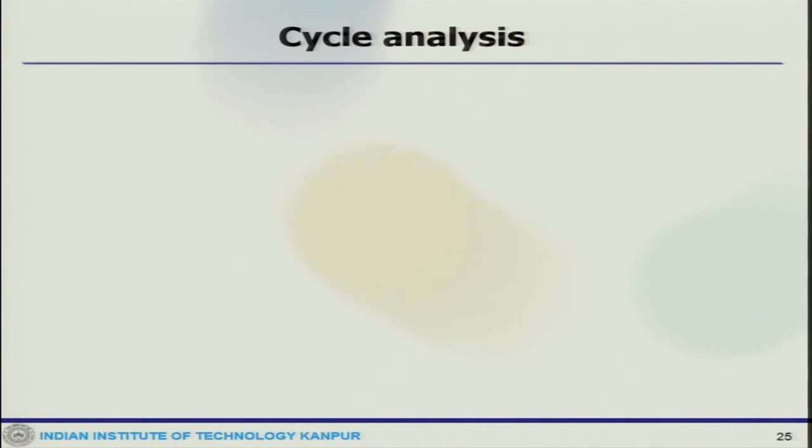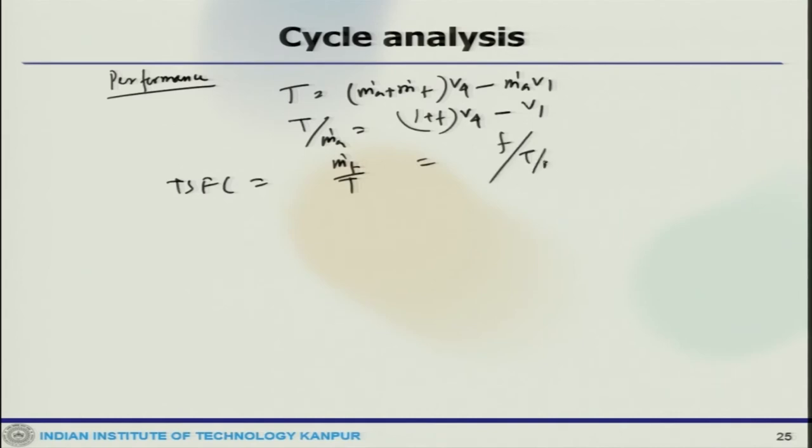Now we just look at the performance analysis. The thrust would be M_dot_A plus M_dot_F times V4 minus M_dot_A times V1. So, T by M_dot_A would be 1 plus F times V4 minus V1. TSFC would be M_dot_F by T, which is 1 divided by T by M_dot_A.